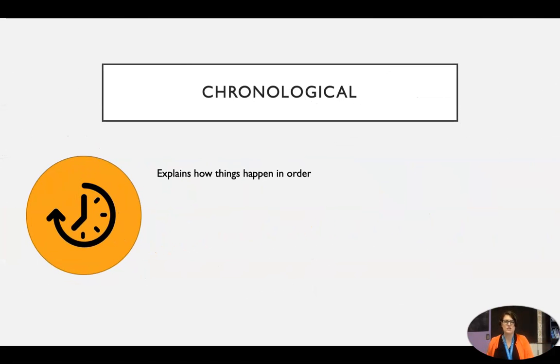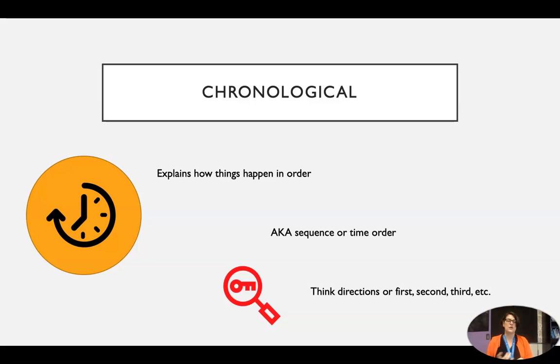Chronological is about how things happen in order: first, second, third, after, then. It's about the time and in a particular order. This is also called sequence or time order because it goes in order. Think about directions like recipes or steps to follow when you're building Ikea furniture. Think about timelines for people to go in, and you've got chronological.